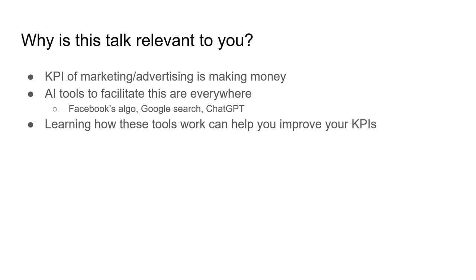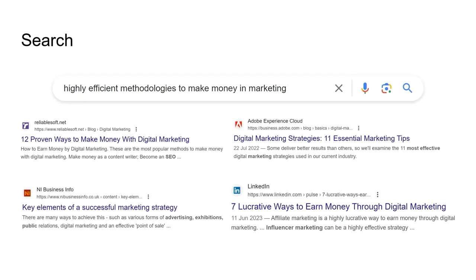One key KPI of marketing and advertising is making money, and there are AI tools everywhere which facilitate this — Facebook's broad targeting algorithm, Google Search, even ChatGPT. Learning how these work can help you improve your KPIs. If you don't care about that, you'll at least learn some buzzwords you can brag about to your friends.